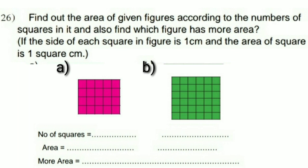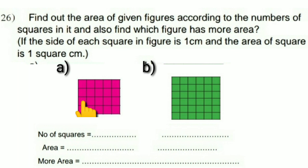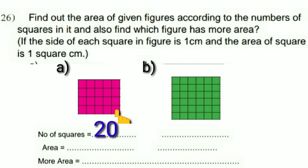Question 26: find the area of the given figures by counting the number of squares, and find which figure has more area. Each square has a side of 1 centimeter, so its area is 1 square centimeter. Counting the squares in figure A: 1 through 20. The number of squares in figure A is 20, so its area is 20 square centimeters.